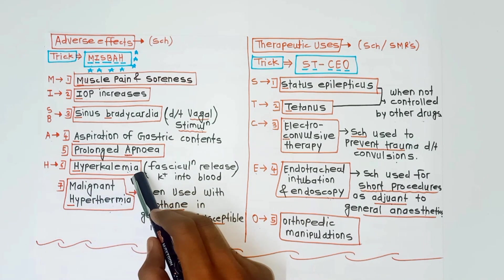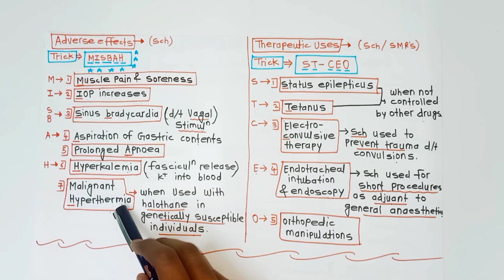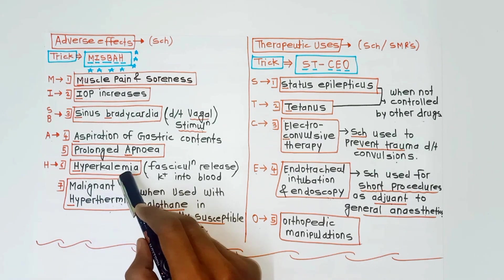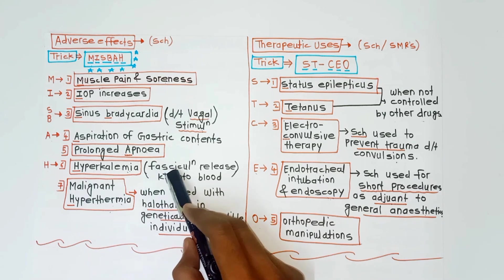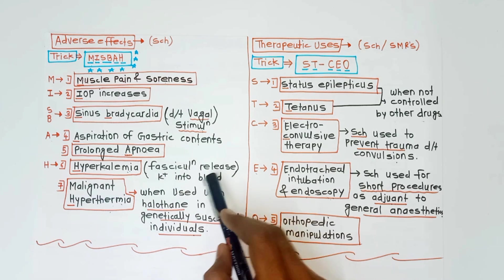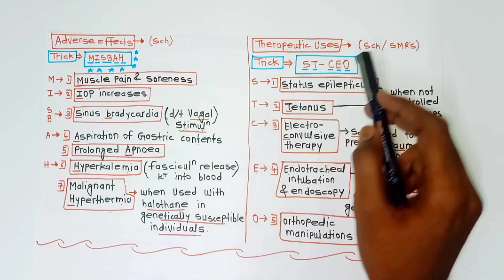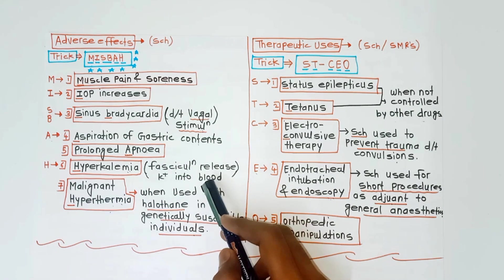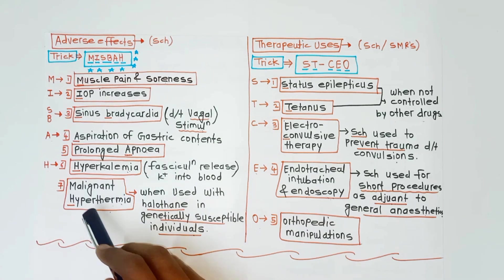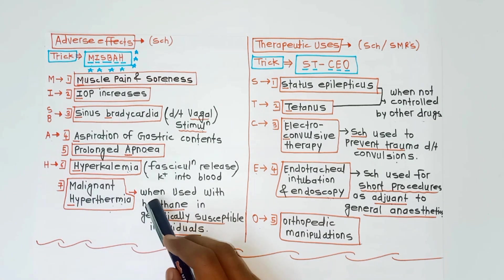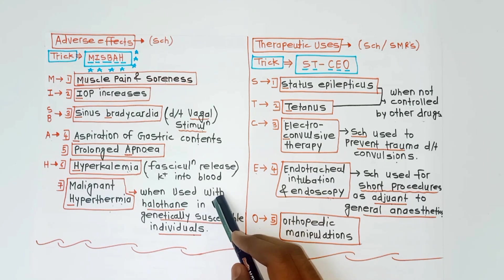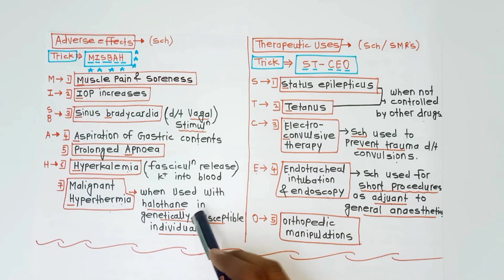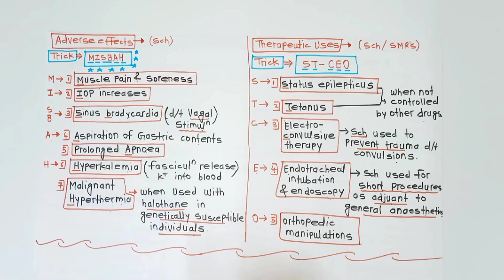H stands for hyperkalemia and malignant hyperthermia. Hyperkalemia occurs because fasciculations release potassium into the blood. Malignant hyperthermia occurs when succinylcholine is used with halothane in genetically susceptible individuals.